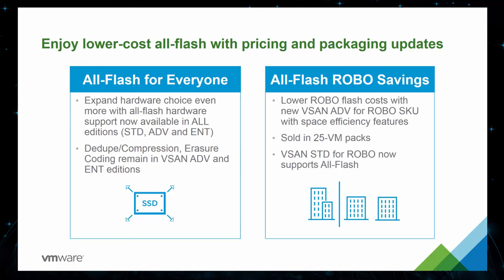For anybody really looking to have the all-flash vSAN, we generally recommend that customers use vSAN advanced or enterprise as best practice so they can enable those dedupe, compression, and erasure coding feature sets. The customer will see tremendous savings — up to 40% — by having the vSAN advanced or enterprise space efficiency features, which typically makes up for the slightly higher license cost. And for robo customers, we've introduced a vSAN advanced for robo licensing pack, similar to the 25VM pack available today, which is priced per VM and not per CPU, providing these customers with the space efficiency features to help further lower their hardware costs.